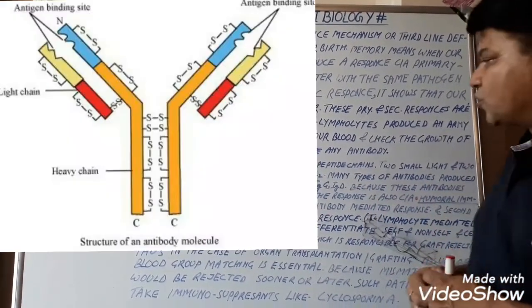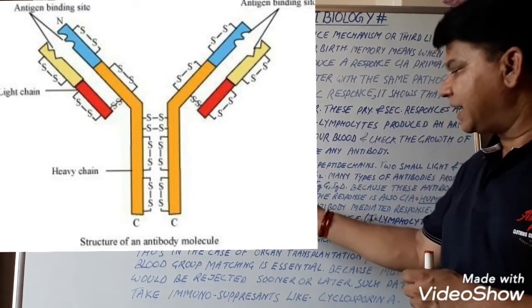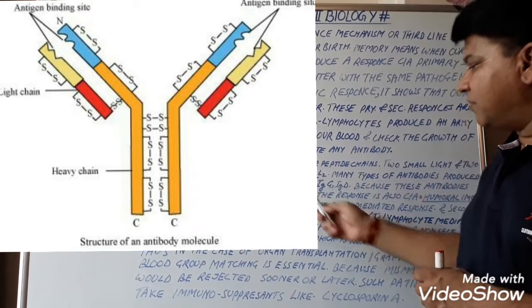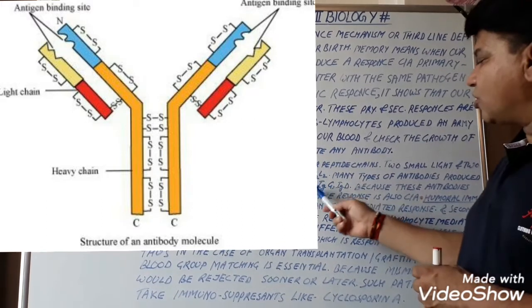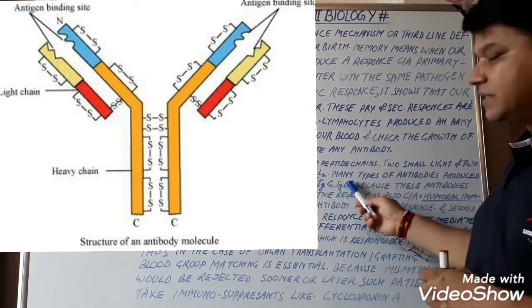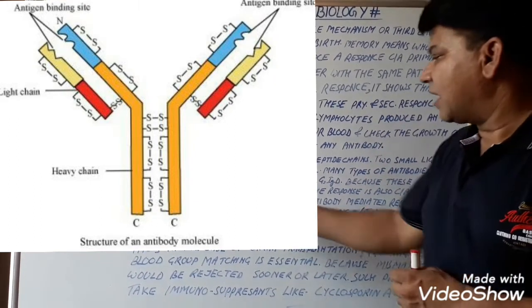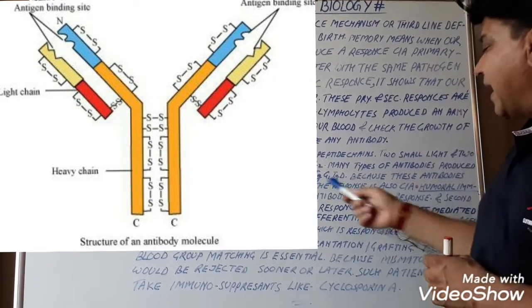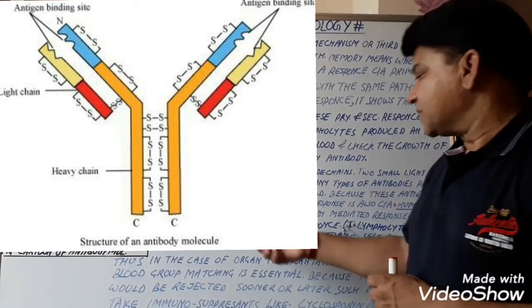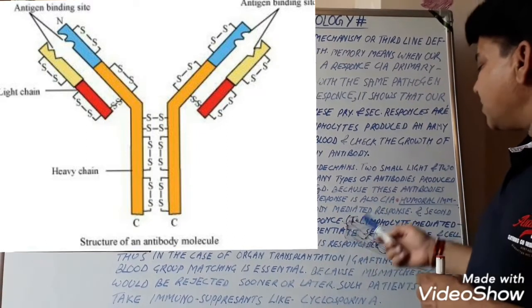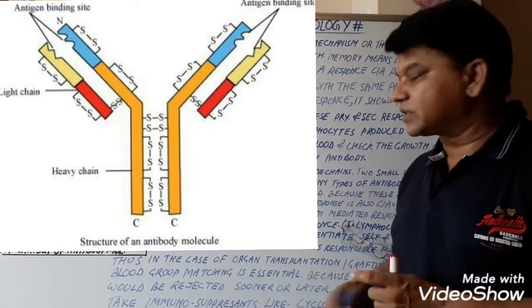Many types of antibodies are produced in our body, for example: IgA (immunoglobulin A), IgM (immunoglobulin M), IgE (immunoglobulin E), IgG (immunoglobulin G), and IgD (immunoglobulin D). Because these antibodies are found in the blood, the response is called the humoral response, and it is a type of antibody-mediated response. The second type of response is CMI — cell mediated immune response.